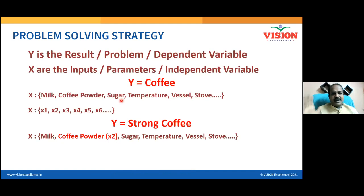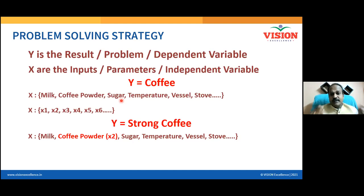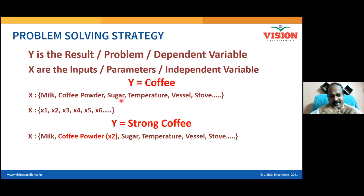If you are able to control the strongness of the coffee, why can't you control the hardness of the aluminium material you are manufacturing? You are producing concrete blocks and you expect a particular level of hardness, a particular level of compressive strength. If you can achieve the desired level of strongness in your coffee, you can achieve the desired level of hardness and compressive strength in anything you produce. All that is required is to identify the critical factor and understand the relationship. We are going to equip you with a statistical tool called correlation and regression analysis, which will help you understand the relationship between X and Y.